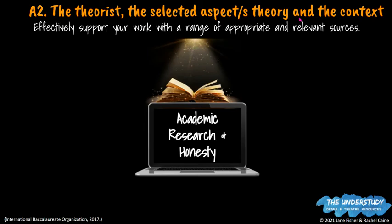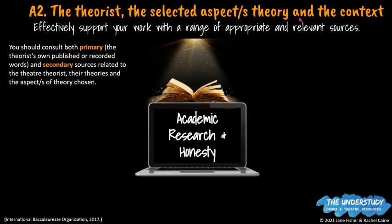You need to effectively support your work with a range of appropriate and relevant sources, meaning primary and secondary sources. Primary sources are the theorist's own published work or recorded words — a documentary, an interview, quotes from a book written by that person. A book written about the theorist would be a secondary source. For example, if you find something written about Augusto Boal but Boal doesn't actually say anything, that is a secondary source evaluating him and his work.